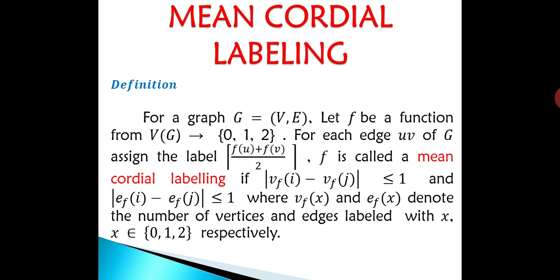For a graph G = (V, E), let f be a function from V(G) to {0, 1, 2}. For each edge (u, v) of G, assign the label ⌈(f(u) + f(v)) / 2⌉. Then f is called a mean cordial labeling if |v(i) − v(j)| ≤ 1 and |e(i) − e(j)| ≤ 1, where v(x) and e(x) denote the number of vertices and edges labeled with x, for x ∈ {0, 1, 2} respectively.